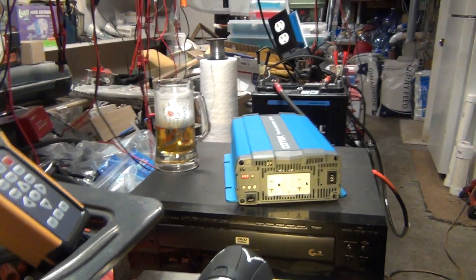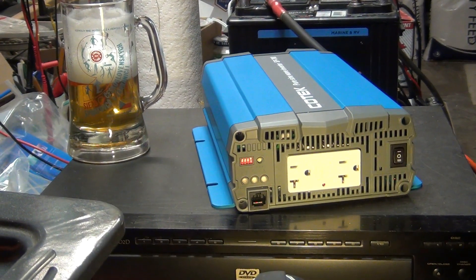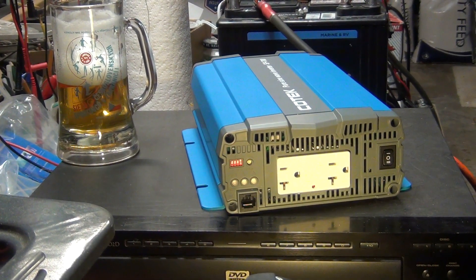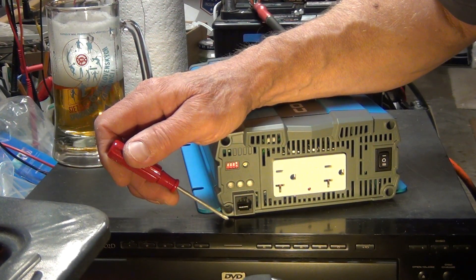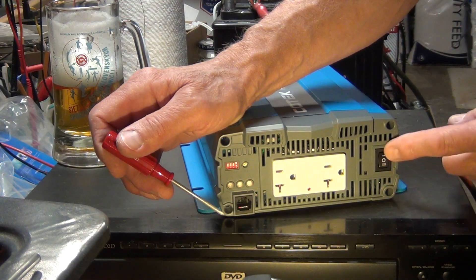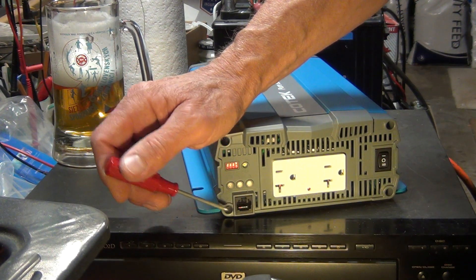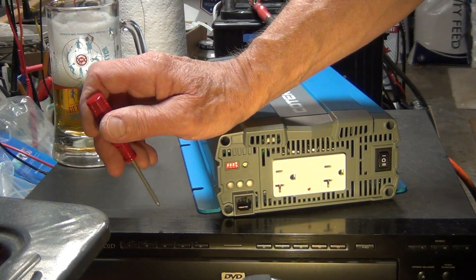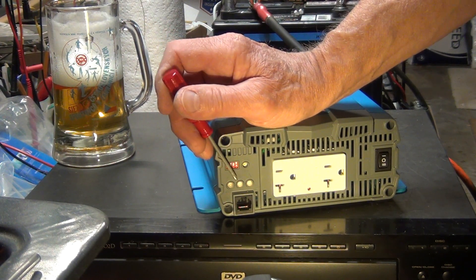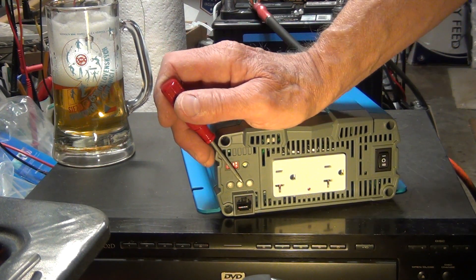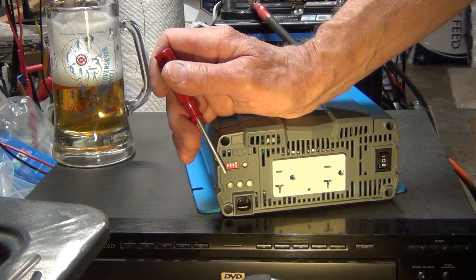The front has a GFI outlet which I really don't like, power switch, remote control port, and three lights. One of them is the battery low, one of them is overload, and this is the pure sine wave. I guess if it goes out of pure sine wave it will turn red, which never happened to me before and I don't want it to happen.